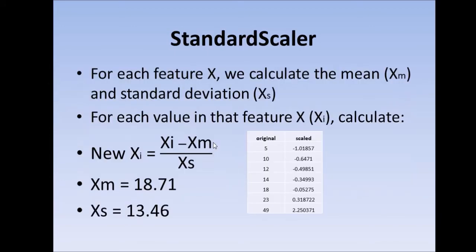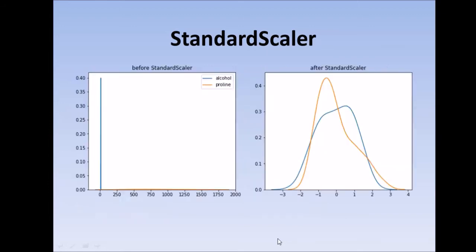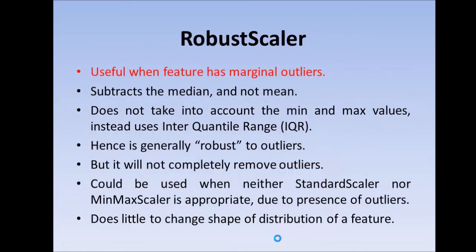Also, in the StandardScaler, if we check, we were using the mean and the standard deviation. So even this mean and standard deviation, they are quite heavily affected by the presence of outliers. And hence, RobustScaler is better than them in that sense.